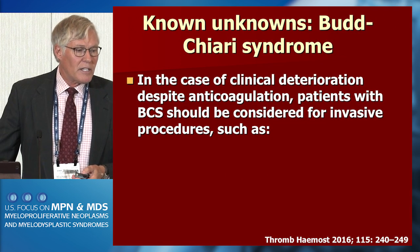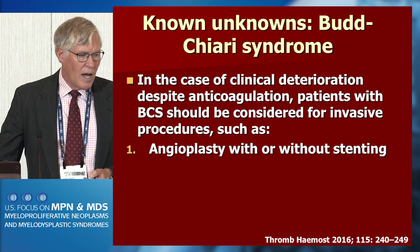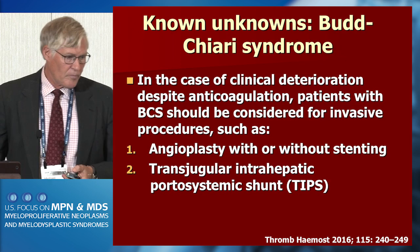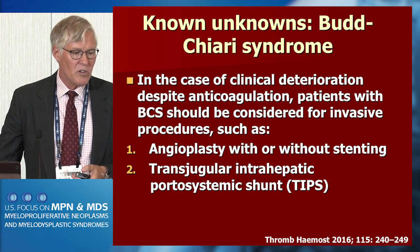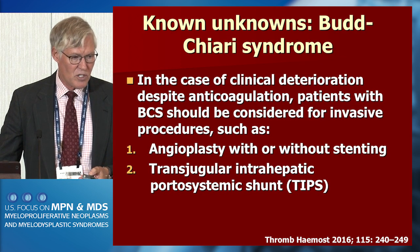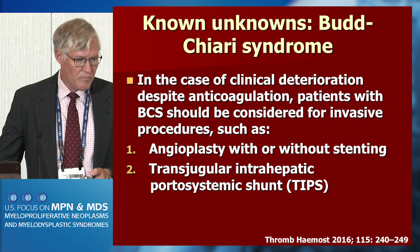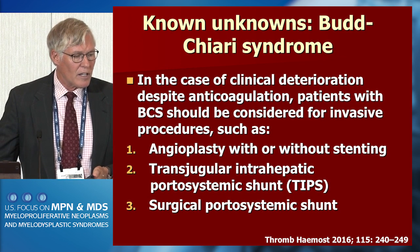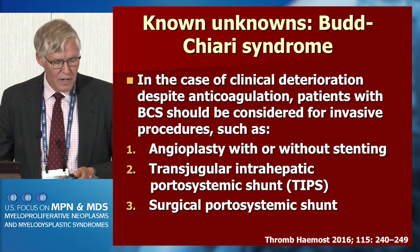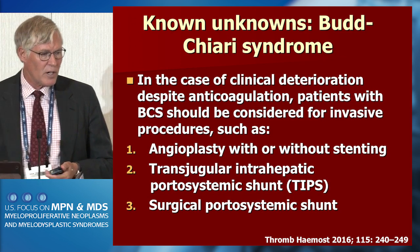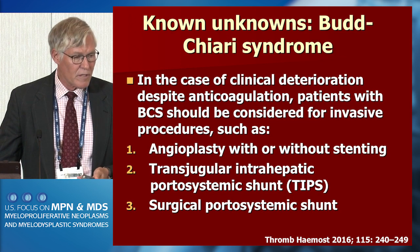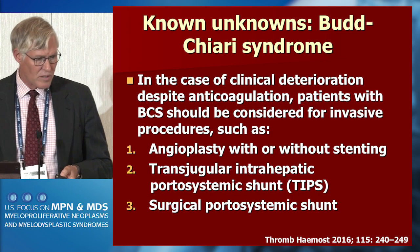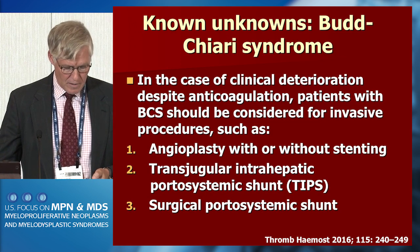For managing Budd-Chiari syndrome when it's fulminant: angioplasty with or without stenting requires your interventionalist; transjugular intrahepatic portosystemic shunt, generally not done emergently but can be; and surgical portosystemic shunt, which is almost always done emergently. Local installation of tissue plasminogen activator often isn't particularly useful simply because of the flow — you're infusing something where the flow is in the opposite direction, so it may not penetrate the clot extensively.